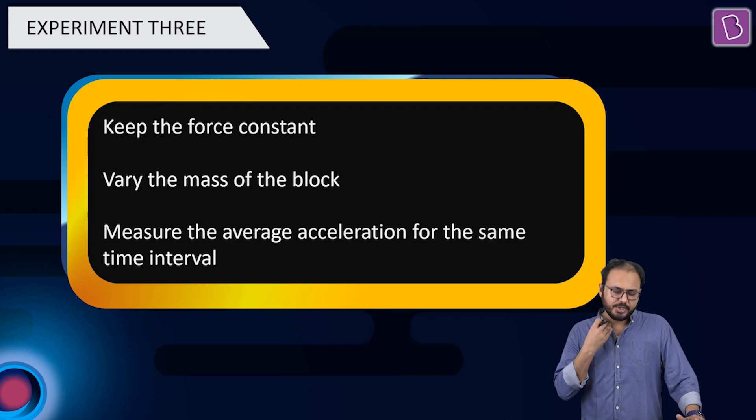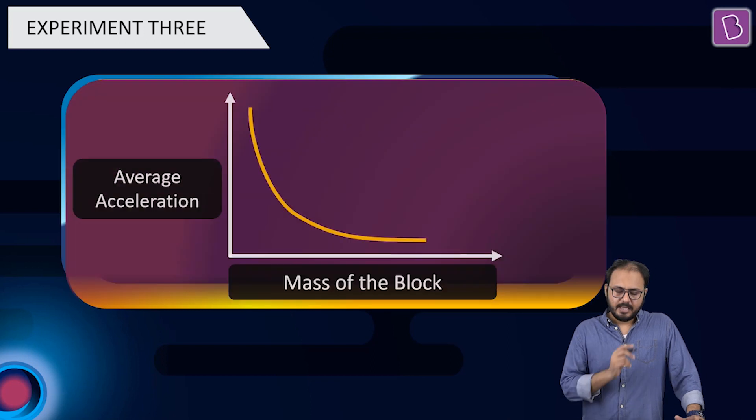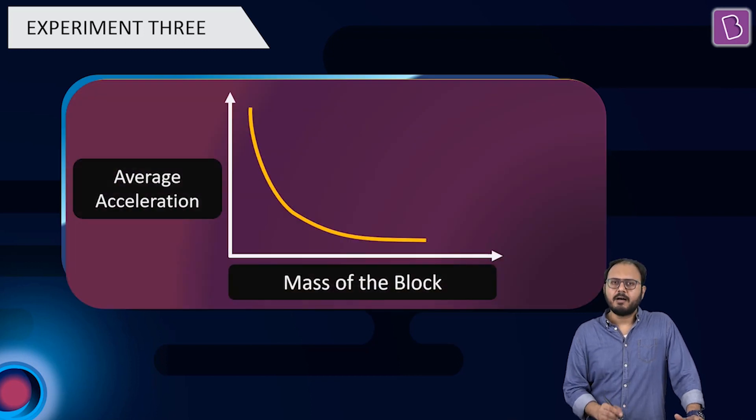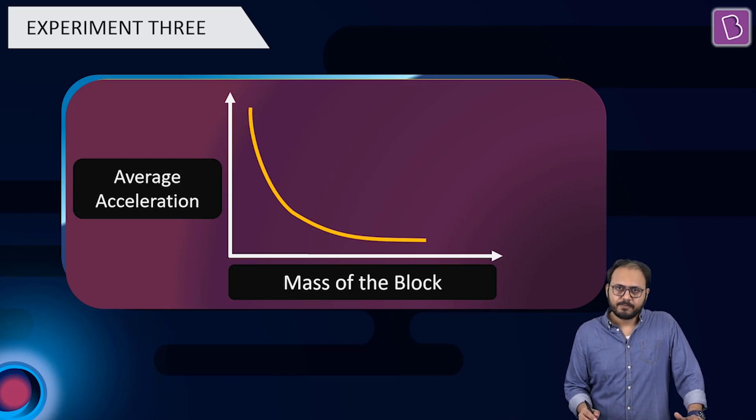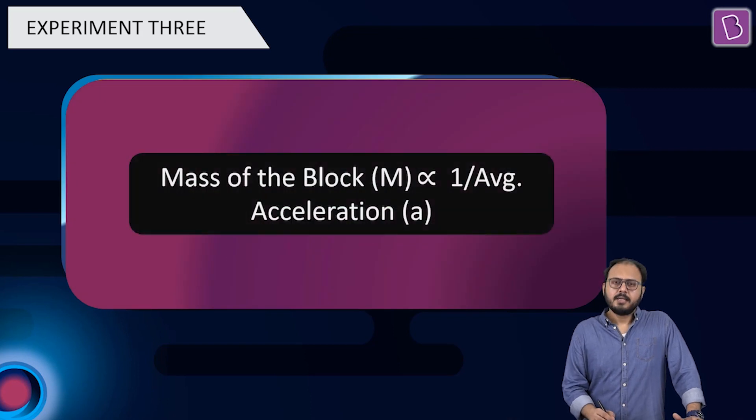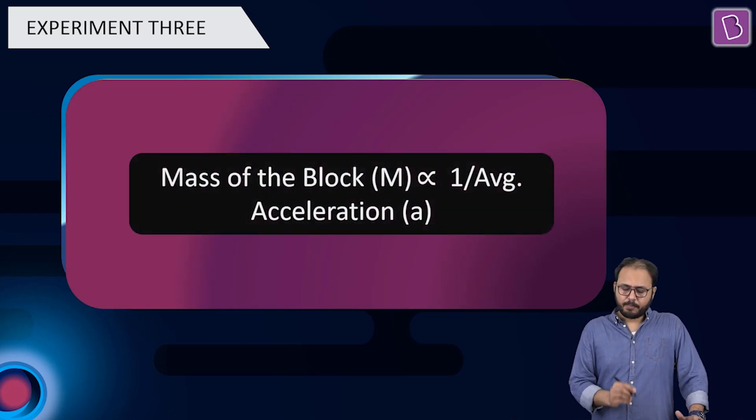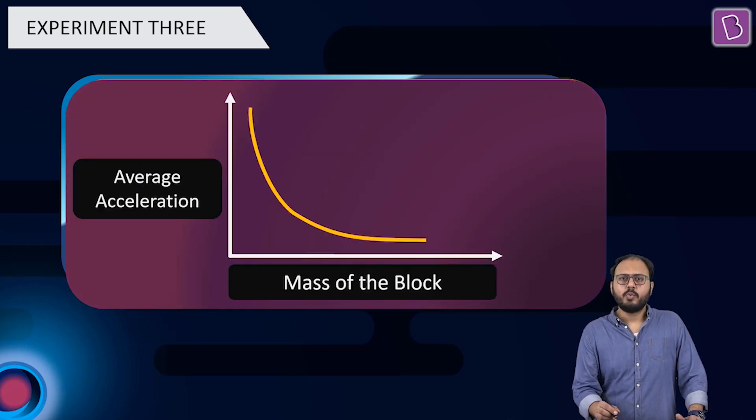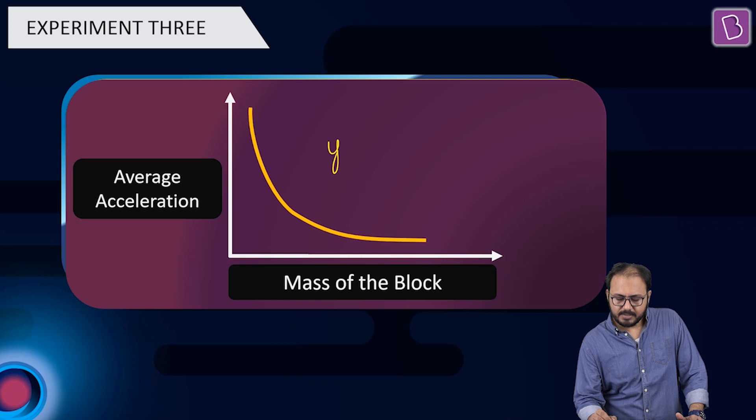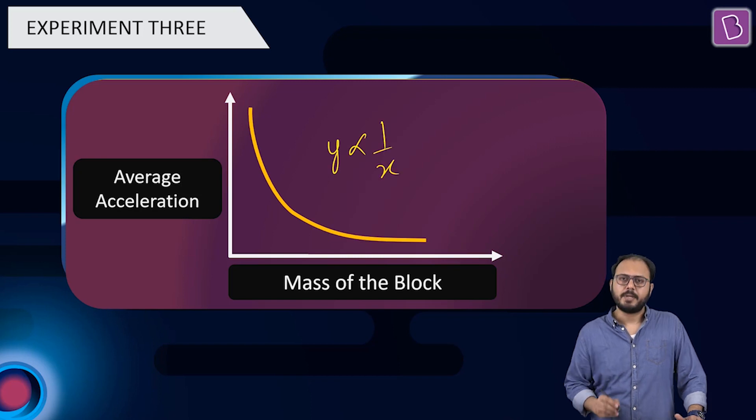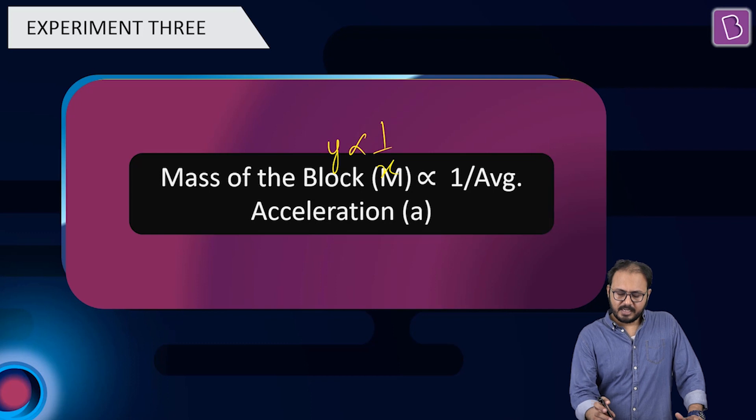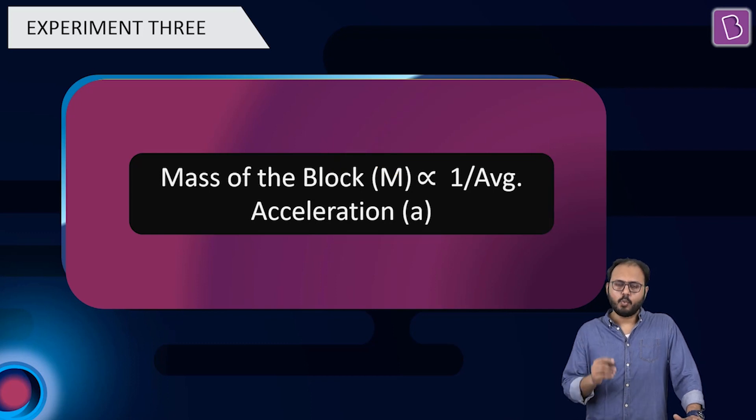When you plot the graph of acceleration versus the mass, it is an inverse proportionality graph. Because m comes out to be proportional to 1 upon average acceleration. This graph is actually inverse proportionality graph. This graph comes out as y proportional to 1 by x shape. And what's the result? The result is that the mass of the block is proportional to 1 upon average acceleration.